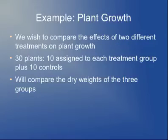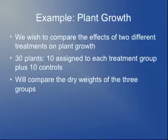Now I'll give you a simple example of how to read some data into R. This is a dataset on plant growth where there are two different treatments applied to a set of plants, and the objective is to see if either treatment has any effect on the growth of the plants. In this experiment there are a total of 30 plants — 10 assigned to the first treatment, 10 to the second treatment, and 10 controls. The objective is to compare the dry weights of the three groups. I'll use this dataset for a couple of examples over the next few lectures.